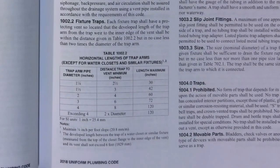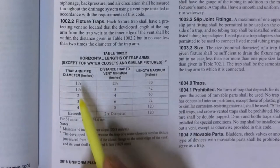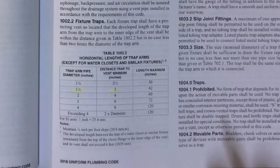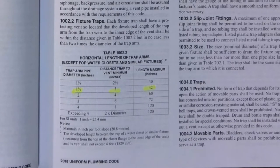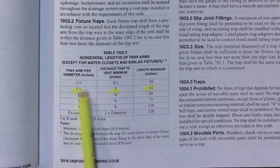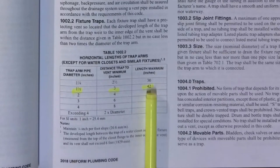Looking at Table 1002.2: for an inch-and-a-half trap arm, the minimum distance from trap to vent is twice the diameter — so 3 inches. The total maximum distance is 42 inches, which is 3 and a half feet. At a quarter-inch-per-foot slope, that's just over three-quarters of an inch of fall, because four feet equals one inch of fall. So if you exceed that trap arm length, you're dropping below the weir of the trap — and that's not a good thing.